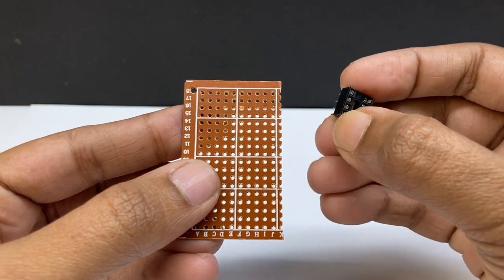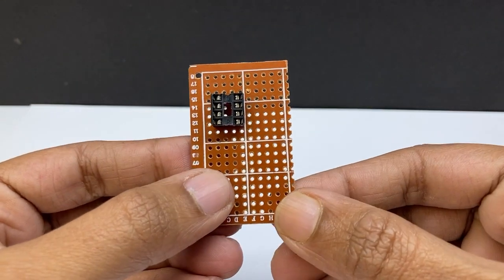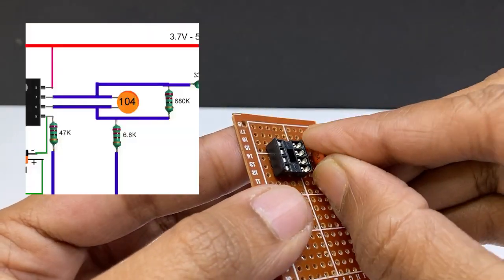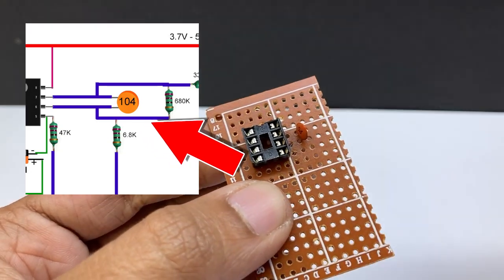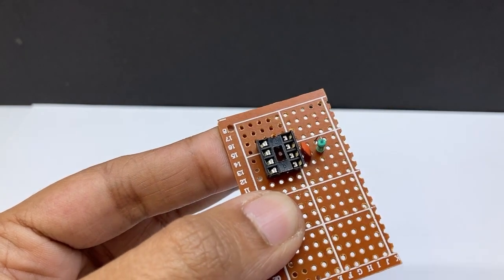Insert IC LM358. I am using an IC base but you can use only IC without a base. Insert 100kΩ and 680kΩ resistors. Connect to IC pin 6 and 7.